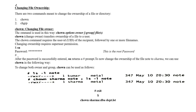To change both owner and group simultaneously, chown can be used as follows: chown sharma:dba department.lsd. This changes both the owner and the group of the specified file.